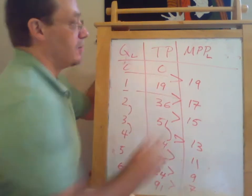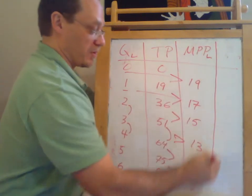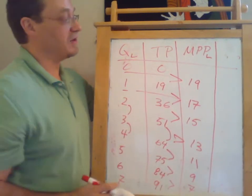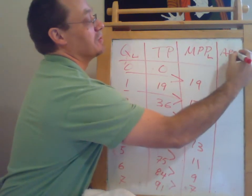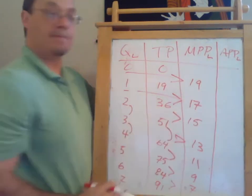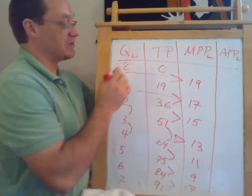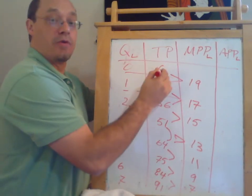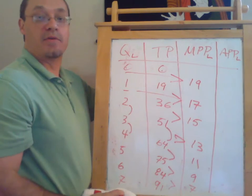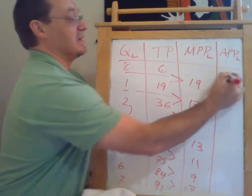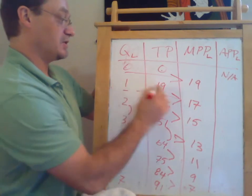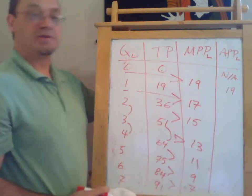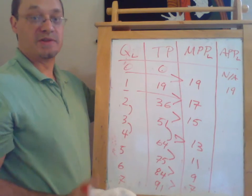So marginal physical productivity. That's one way of measuring productivity. We could also measure average physical productivity of labor. Average physical productivity, we would take total product and divide by the quantity of labor. And so this would be, you know, dividing by zero, that's not going to work out for us.